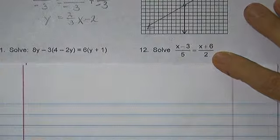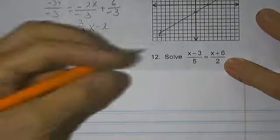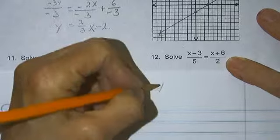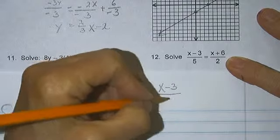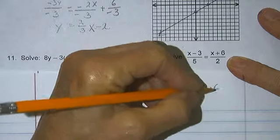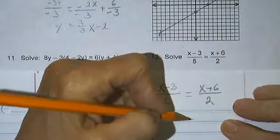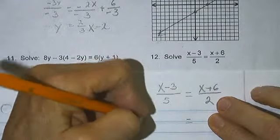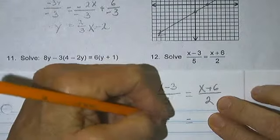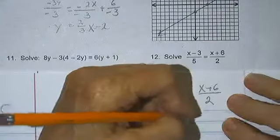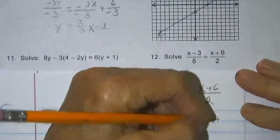Well, I'm going to start out by cross multiplying. x minus 3 over 5 is equal to x plus 6 over 2.